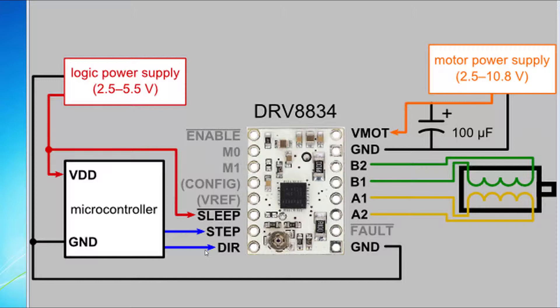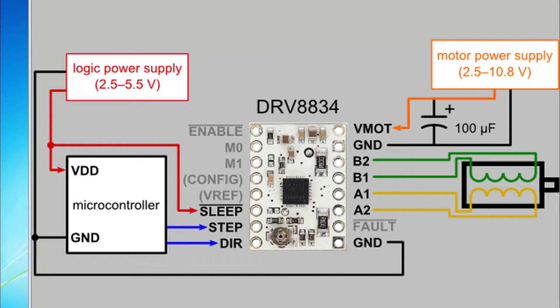There's a direction control which you can use to reverse the direction. There's a pot here where you can set the current limit and I've set it to 0.67 amps which is the maximum current the motor is rated for, and I'm using it in full step mode.